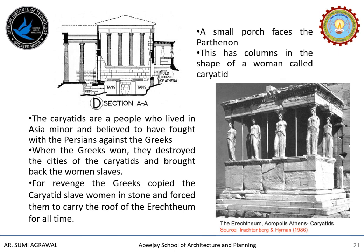This southern porch has columns in the shape of women called caryatids, which are linked to a historical story. They represent the people who lived in Asia Minor, believed to have fought with the Persians against the Greeks. When the Greeks won, they destroyed the cities of these people, killed all the men and brought back the women as slaves. For revenge, the Greeks copied the slave women in stone and forced them to carry the roof of the Erechtheum for all time, making this porch a very unique feature of the temple.